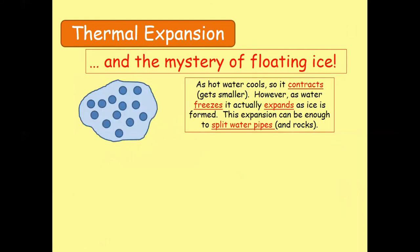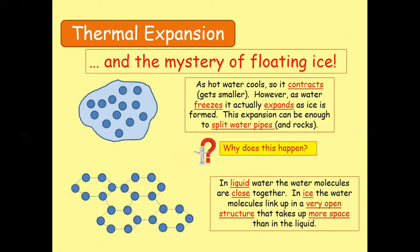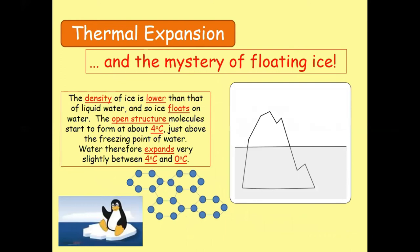There is the mystery of floating ice: ice floats on the surface of water because of its lower density. In liquid water, the molecules are closer together, whereas in ice the water molecules are linked up in a very open structure that takes more space due to hydrogen bonding. The density of ice is lower than that of liquid water, so ice floats easily. When we move the temperature from zero to four degrees, water actually contracts, and when we lower the temperature from four to zero degrees, water actually expands. This is called anomalous expansion of water.